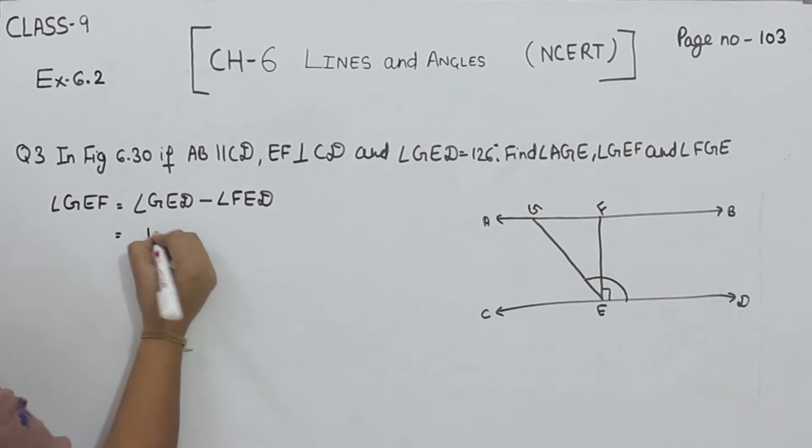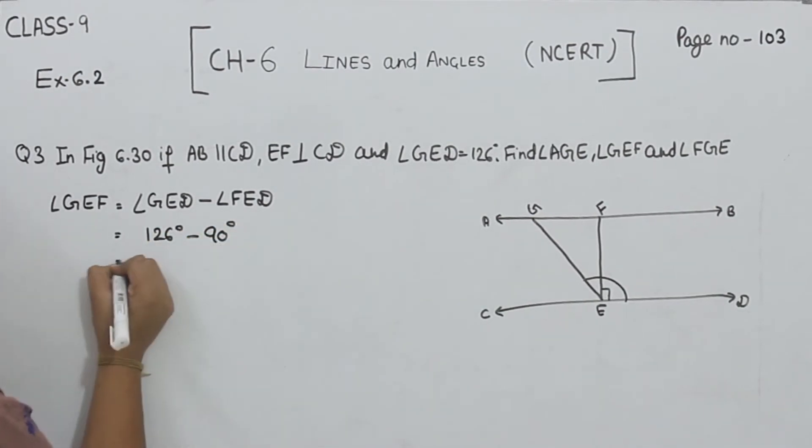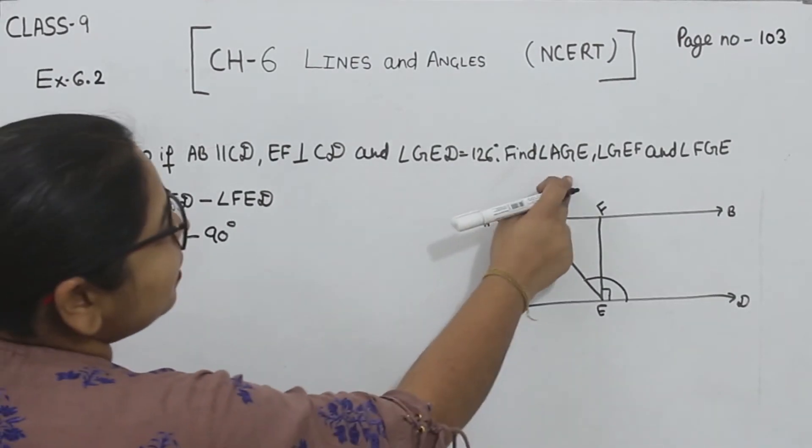Now 126 degrees as given, minus 90 degrees. We will subtract it, so angle GEF equals 36 degrees. Now comes the next angle.